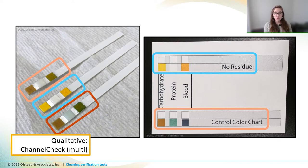Now, a scope where any pad turns colors should be re-cleaned because it's still dirty, even if it doesn't have all three types of soil present.